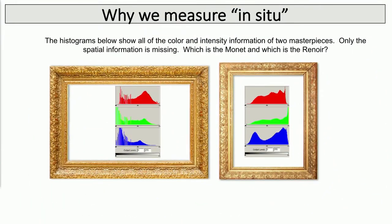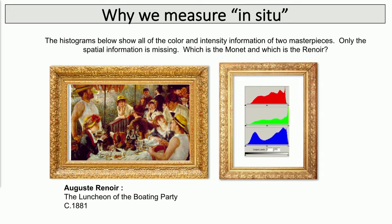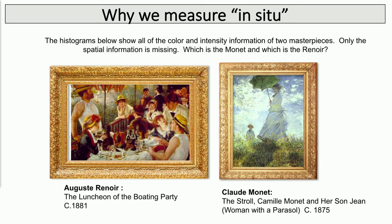I'm going to start with something a little bit less scientific, but I think it illustrates very well the importance of spatial information. Here you have two histograms showing only the color intensity of two masterpieces — one is a Monet and one is a Renoir. Can anyone tell which is which? It's difficult. If you only have the color intensity, it's quite difficult. You need to put in the spatial information — how the colors are represented in space — and with that, you can tell which one is which.